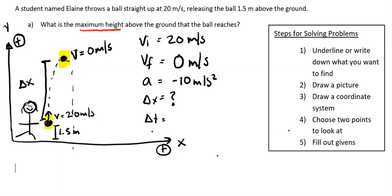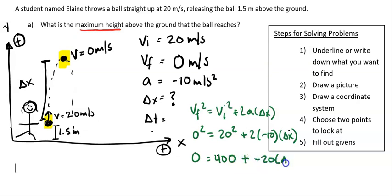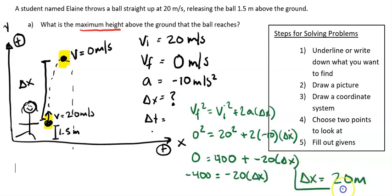Now I just need to pick a constant acceleration equation. I encourage you to always have an equation sheet. I'm going to use vf² = vi² + 2a·Δx. So: 0² = 20² + 2(−10)(Δx), which gives 0 = 400 + (−20)Δx. Moving 400 to the other side: −400 = −20·Δx. Therefore, displacement equals 20 meters.